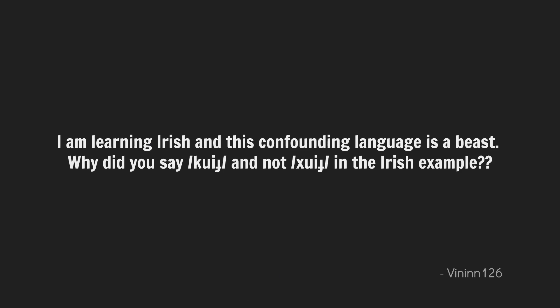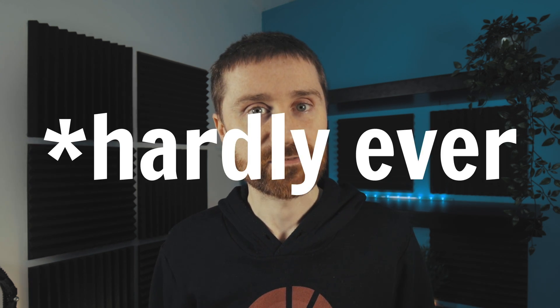I am learning Irish and this confounding language is a beast. Why did you say 'cuid' instead of 'cuid' in the Irish example? The question is basically asking why my pronunciation was off in lenition environments in Irish. So I'd like to explain lenition first before answering, just because it's a super dope thing that Irish does — and other Celtic languages too. In English, we have nouns like the word 'band,' and no matter where those nouns occur and in what grammatical environments, they're always the same. The word never changes.